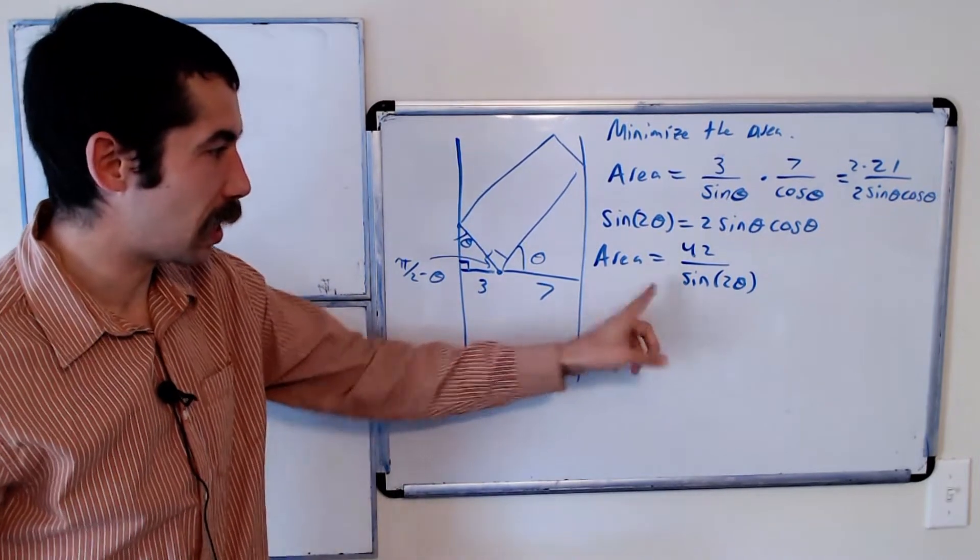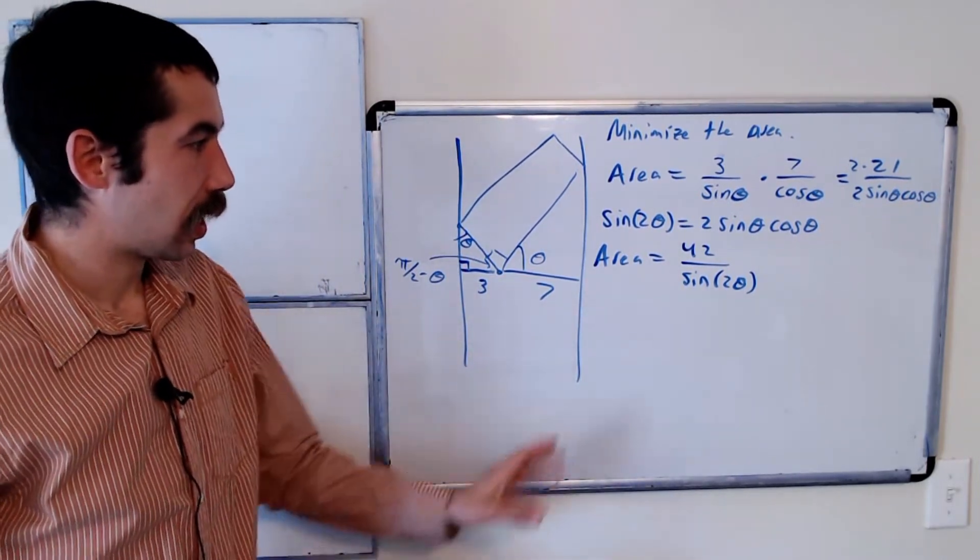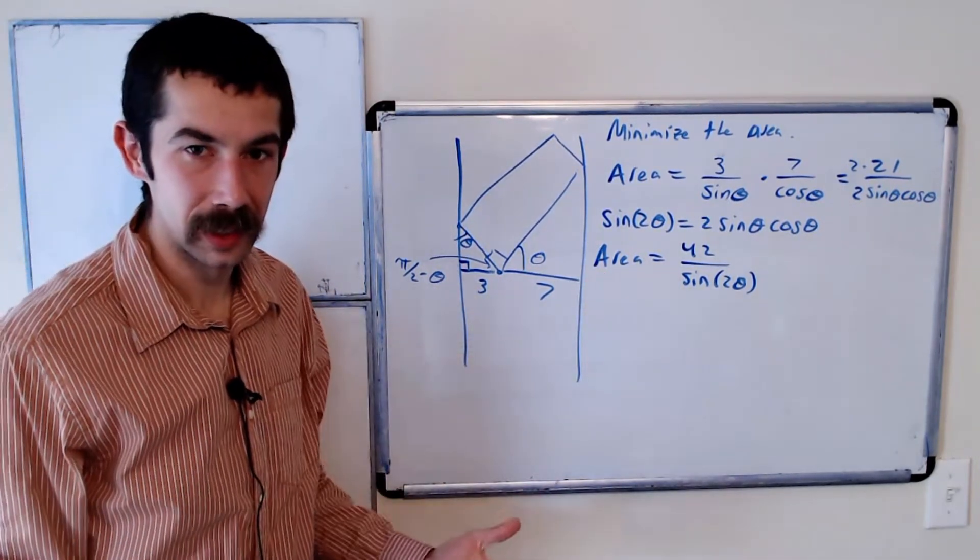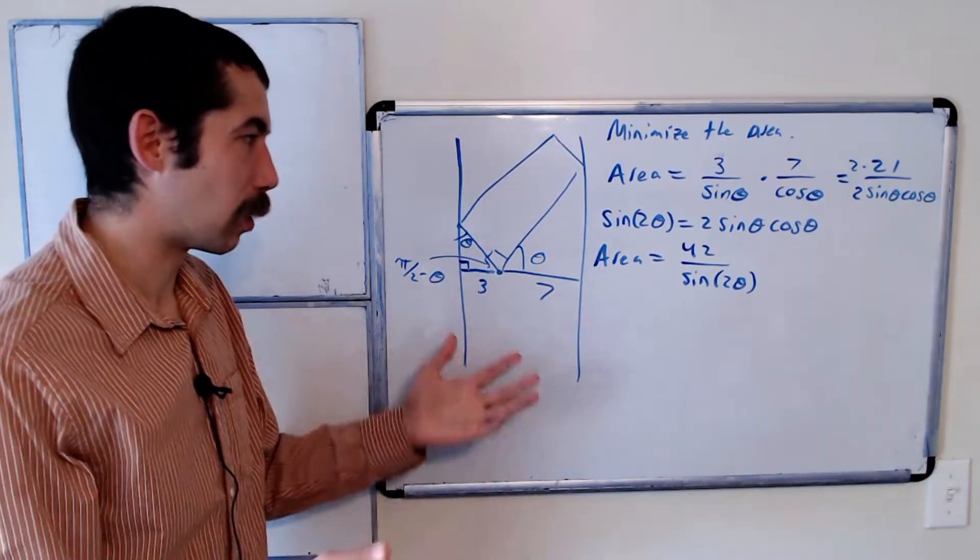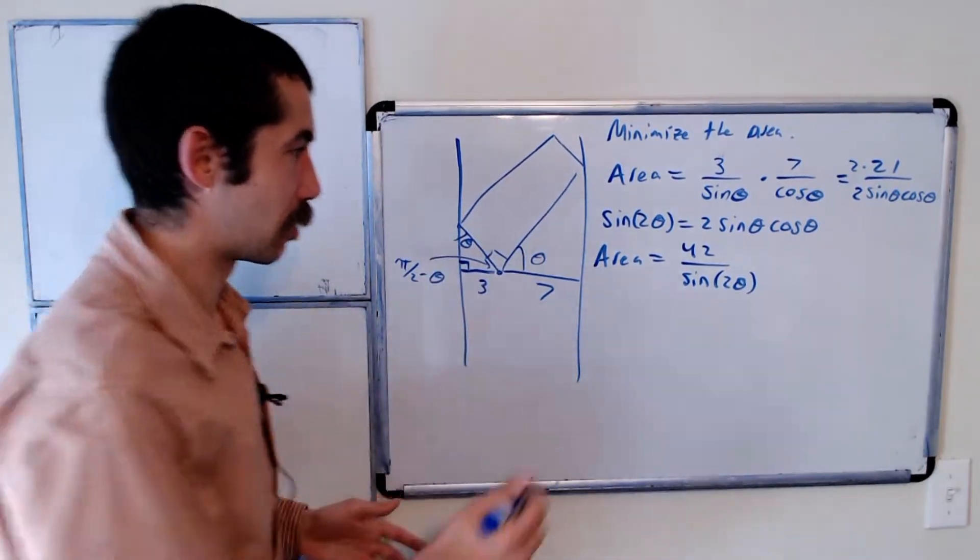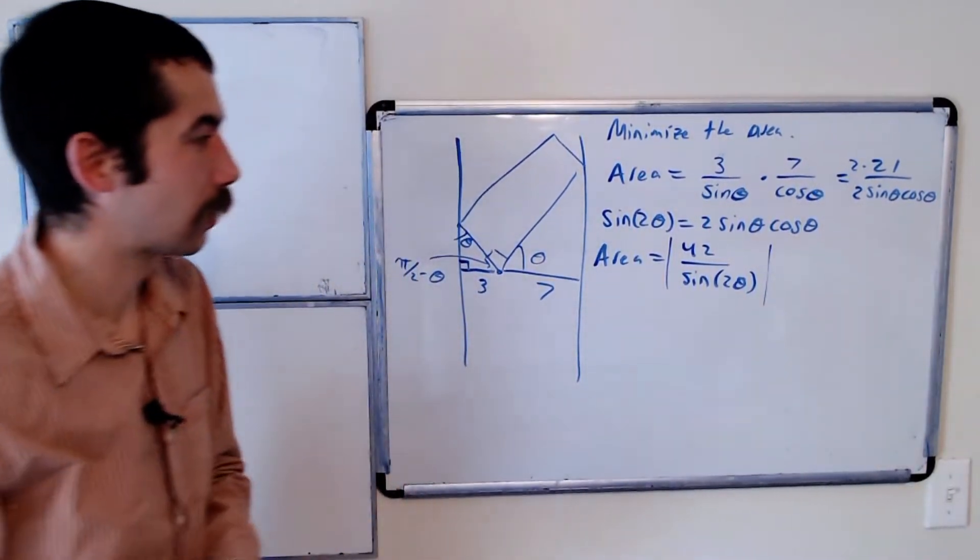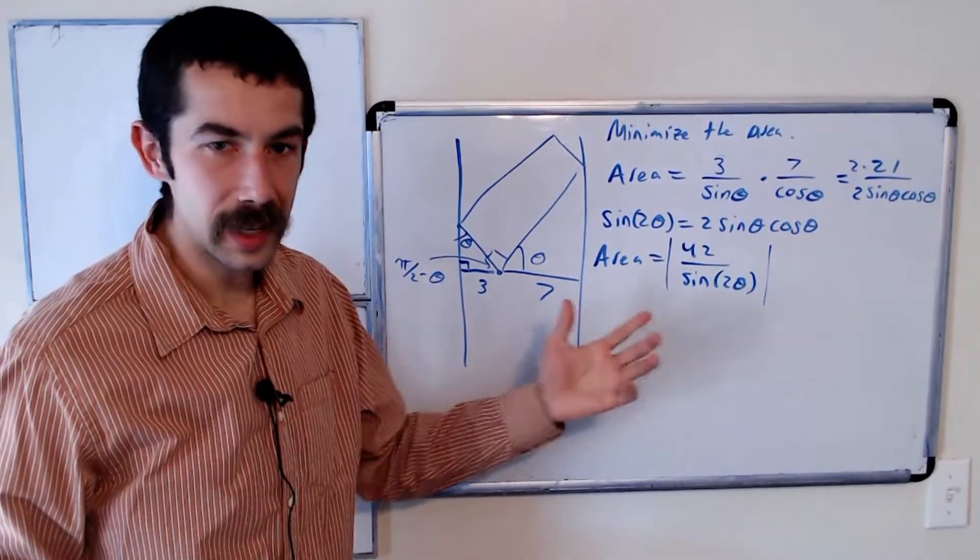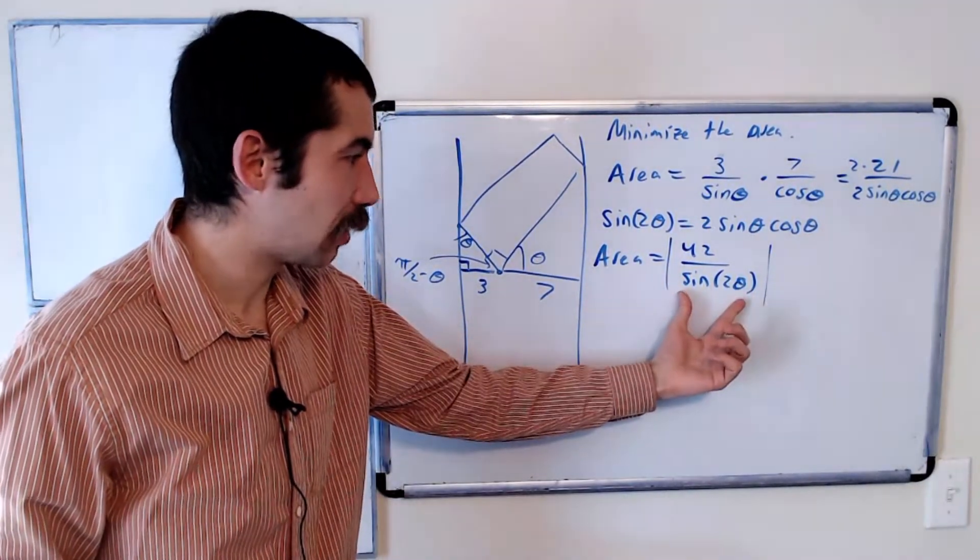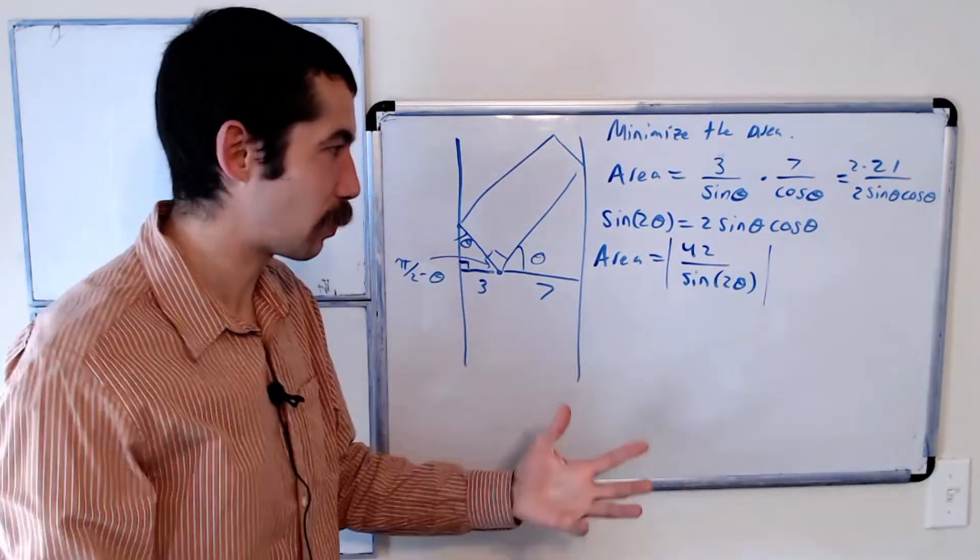Okay, and we want to minimize this. And this is minimized—well, we also want to make sure that it's positive, so I guess we'll take the absolute value. This is minimized when sine of 2 theta is as big as possible, right?